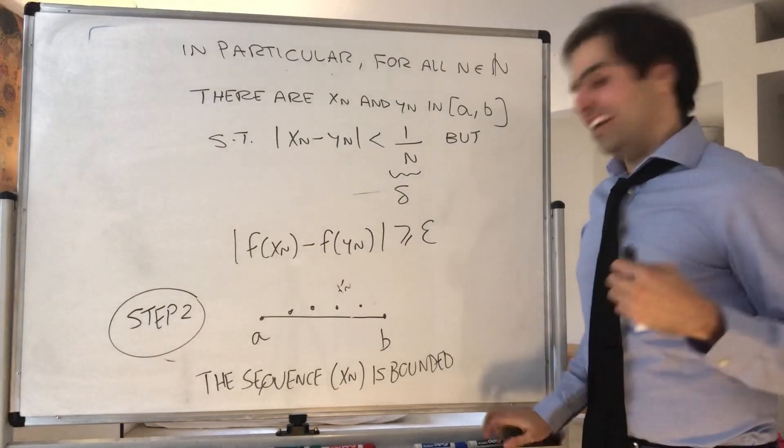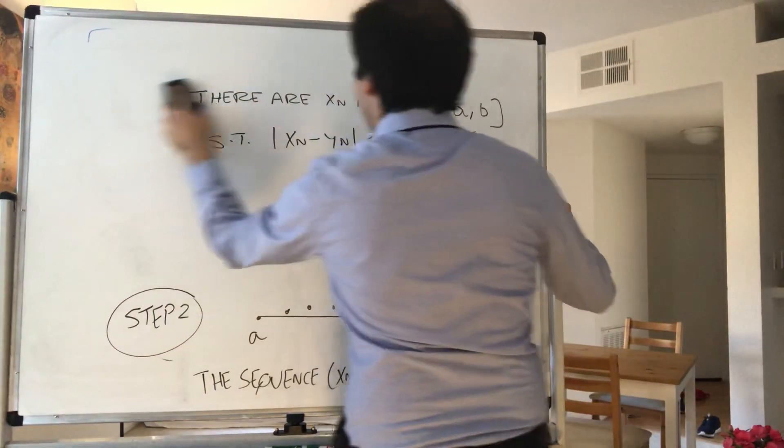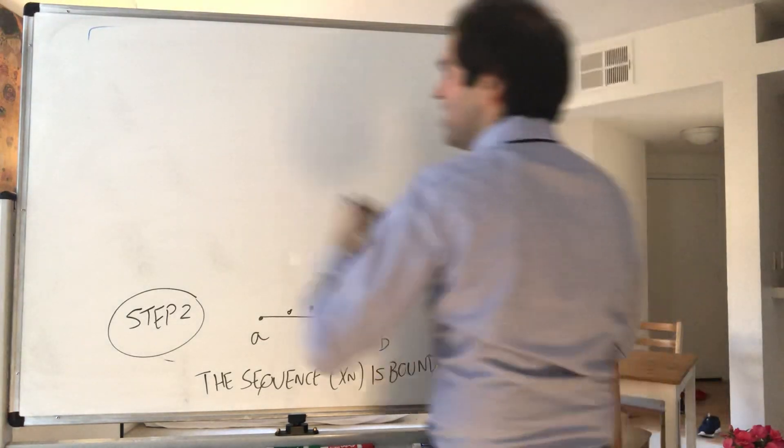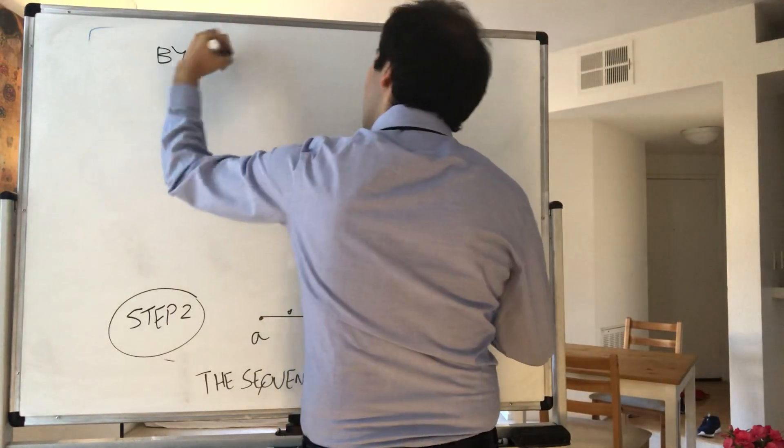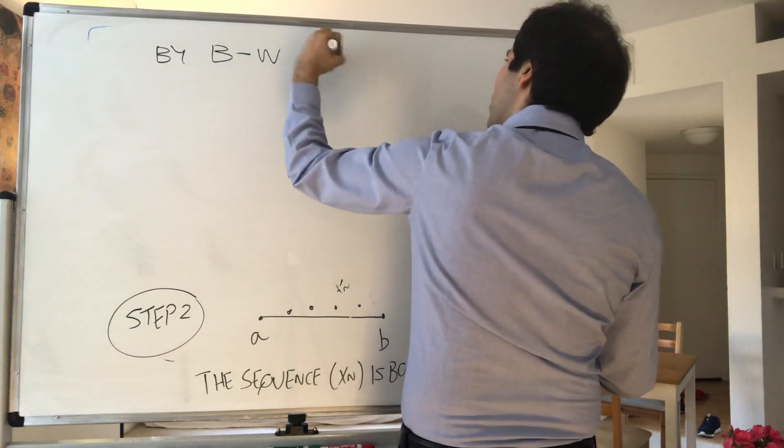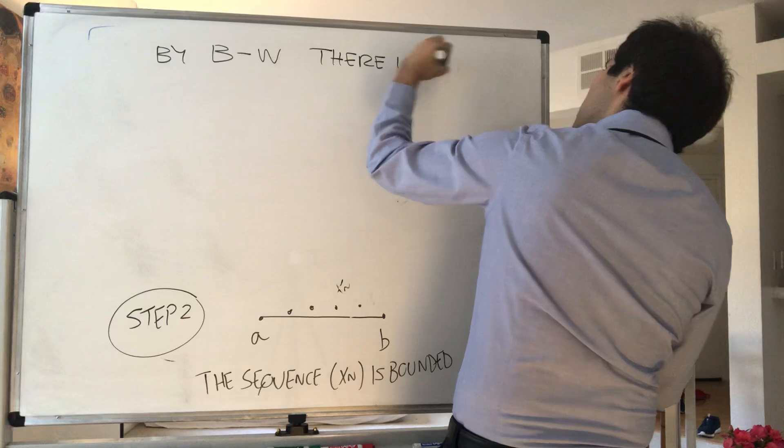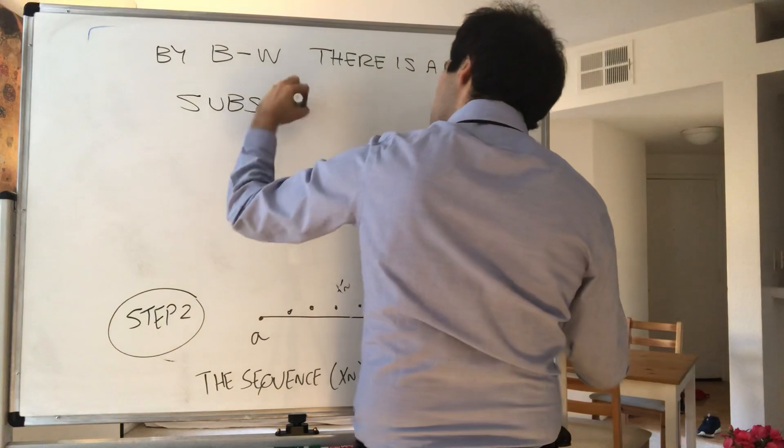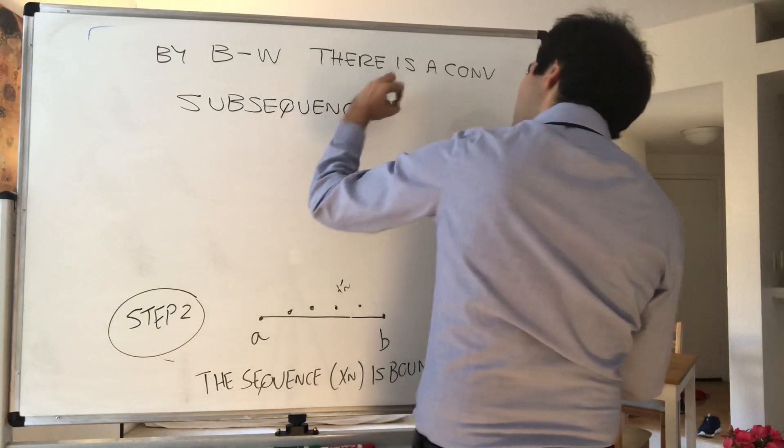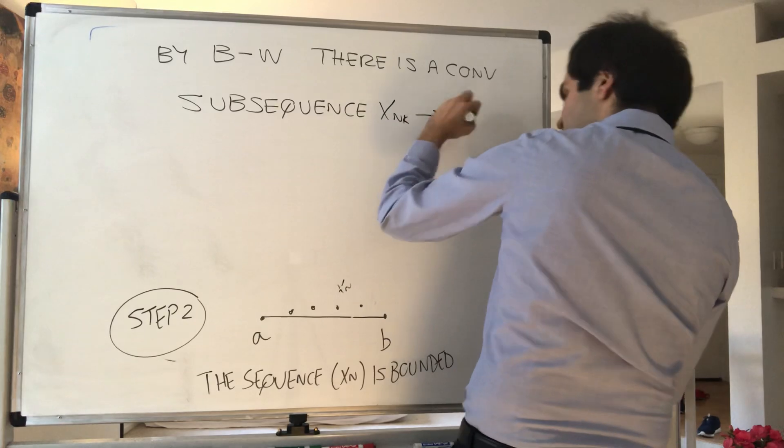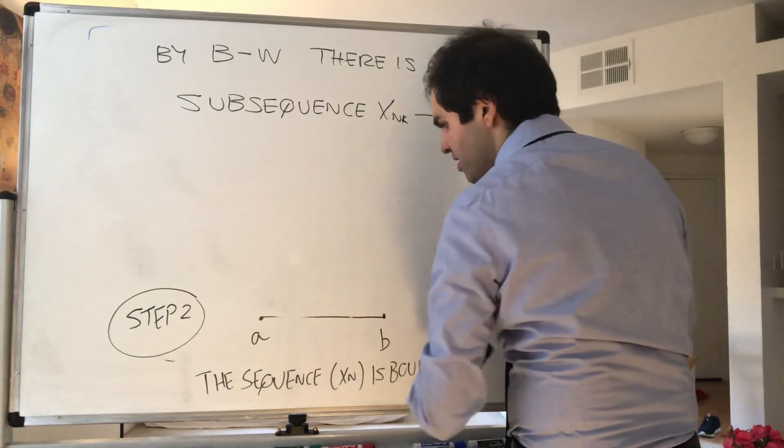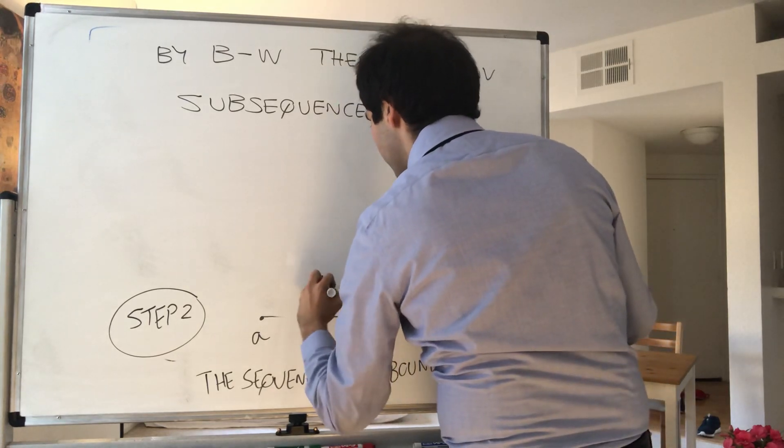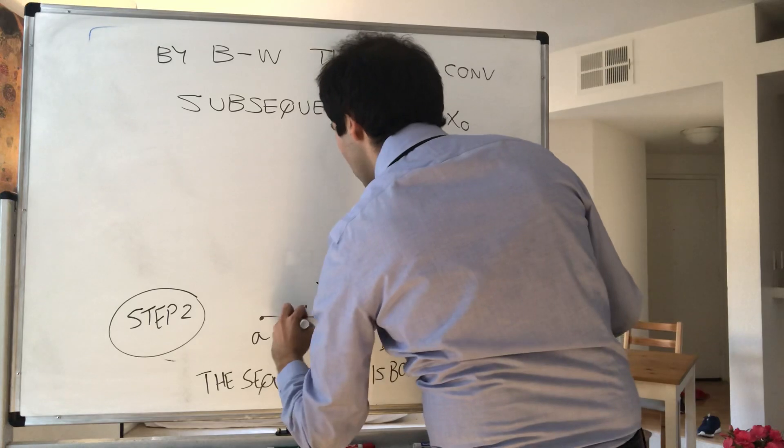And well, since we have a bounded sequence of real numbers, for the last time in this course, Bolzano-Weierstrass. So by the Bolzano-Weierstrass theorem, we know that there is a convergent subsequence x_nₖ that goes to some x₀.